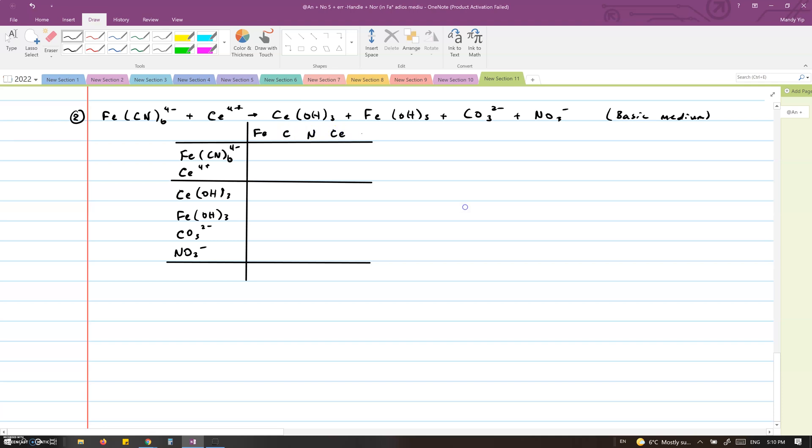And we carefully fill out the oxidation number table. CN minus, which is cyanide, has a minus 1 charge. N, being a group 15 element, has a minus 3 charge, so C must be plus 2. Then that means Fe must be plus 2 to give an overall charge of minus 4. Similarly, hydroxide has a minus 1 charge, and we have 3 of them, so Ce must be plus 3 in order to end up with an overall charge of 0. C is plus 4 in CO3 with an overall charge of minus 2. While N is plus 5 in NO3 with an overall charge of minus 1.